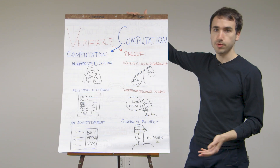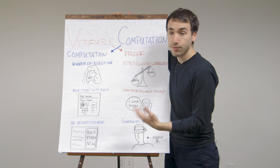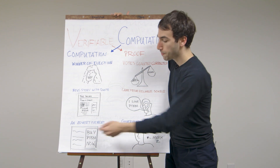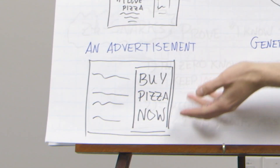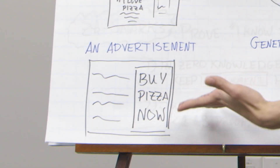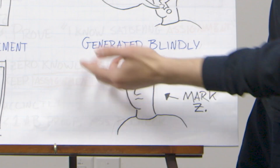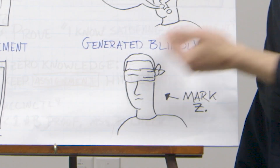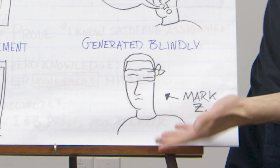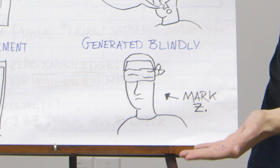As a final example, you can imagine an advertising service computing an advertisement — saying buy pizza — along with a proof that the advertisement was generated blindly without access to your personal information.